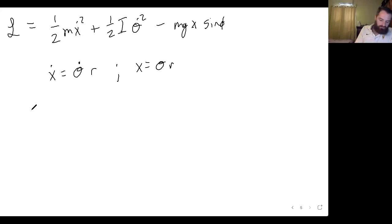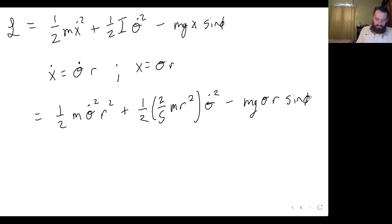So ẋ is θ̇ r and x is θ r. Plugging those all in, you get one-half m θ̇² r² plus one-half—and again, we'll be replacing the moment of inertia with its expanded form for that object—θ̇² minus mg θ r sin φ. And just like we got the fraction we had before, we'll get the same one here with seven-tenths.